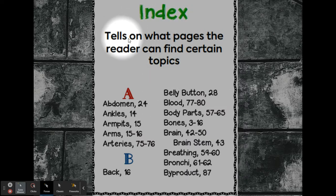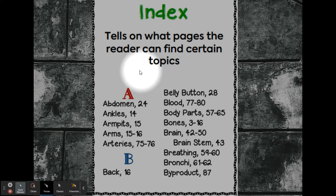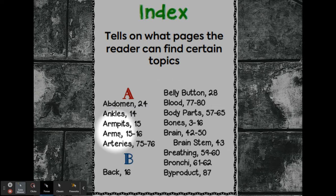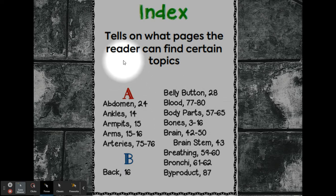Index. This tells on what pages the reader can find certain topics. This is in the back of the book, and it's in alphabetical order — not in the order in which it appears in the book. They start with the A's, and each topic has a corresponding page number. So if we wanted to look at belly button, we'd go to page 28.